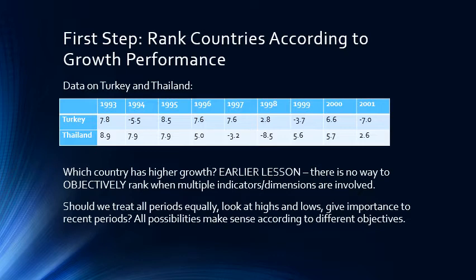As we have studied earlier, when you have multidimensional criteria — when you have many indicators — you cannot combine them into one indicator without some subjective criteria. For example, if we treat recent periods with more importance, or we look at the highs and the lows, or we treat all periods equally, all of these possibilities make sense according to different objectives and they will give different rankings. So the first issue is how do we rank the countries?